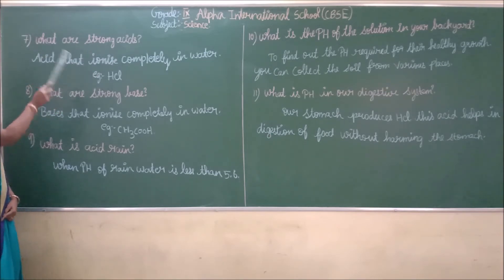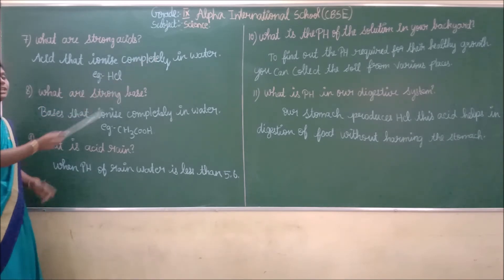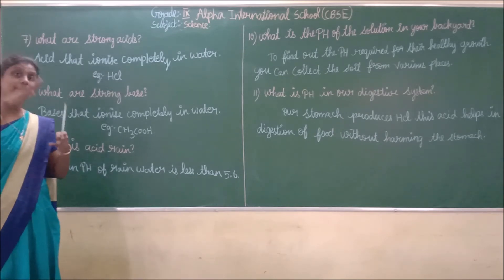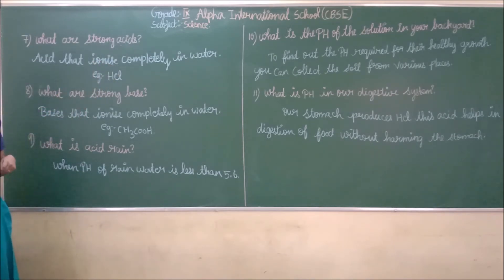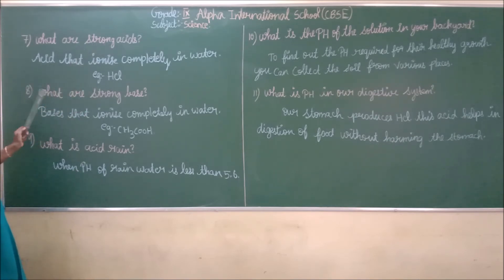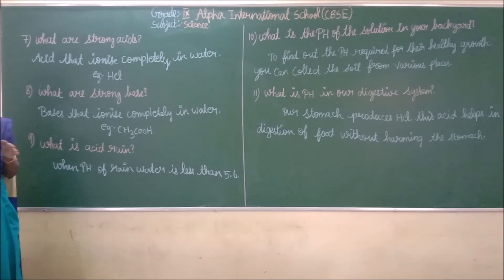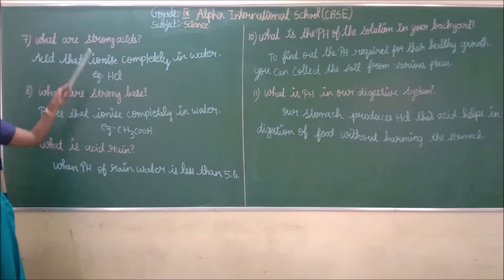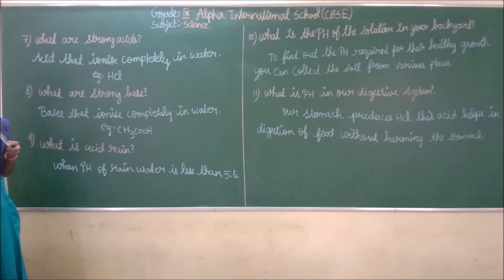What is a strong acid? An acid that ionizes completely in water is called a strong acid. The example of a strong acid is HCl. What is a strong base? A base that ionizes completely in water is called a strong base.